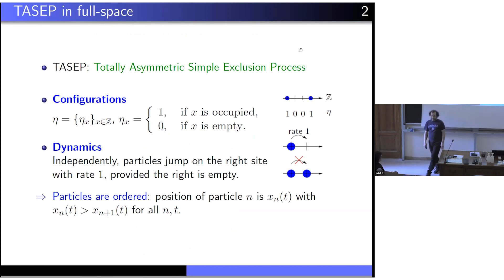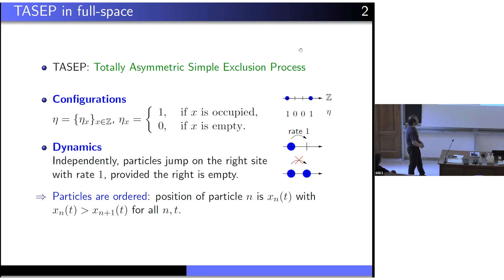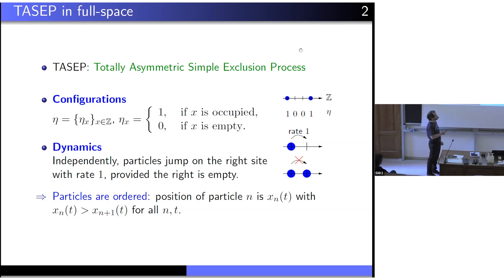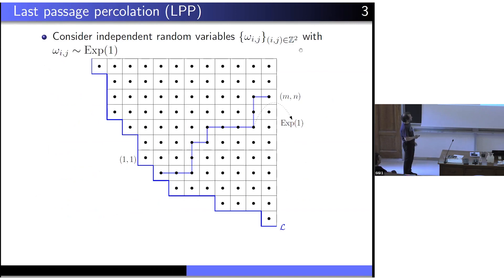Since many of you are less familiar with last passage percolation but more familiar with the exclusion process, I will briefly explain the connection between the two. Essentially they are two sides of the same coin. The totally asymmetric simple exclusion process (TASEP): particles jump to the right with rate one provided the site is not occupied. The second model, last passage percolation, is one many of you are less familiar with.